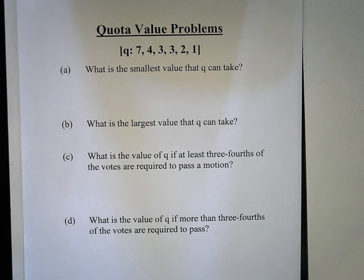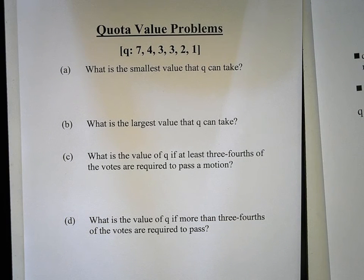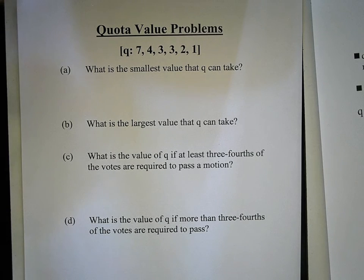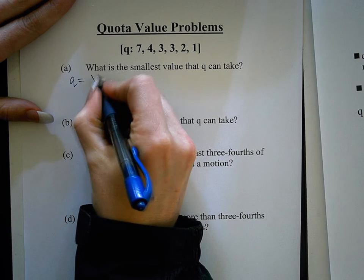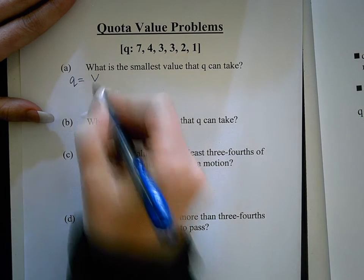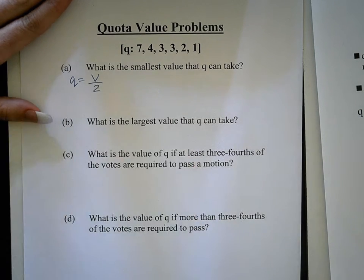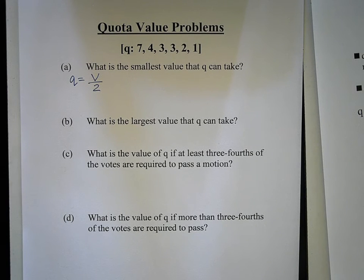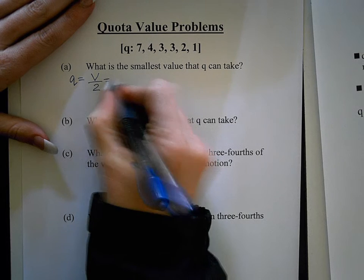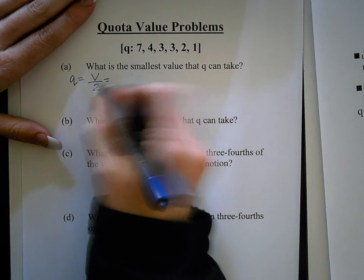First, we're going to find the smallest value that Q can take. The smallest value that the quota can be is over 50%. To figure that out, we take the total number of votes — capital V equals the total number of votes — and divide it by two. That tells us exactly what 50% is, and then we add one or round up if it's a decimal, so our quota is over 50%.